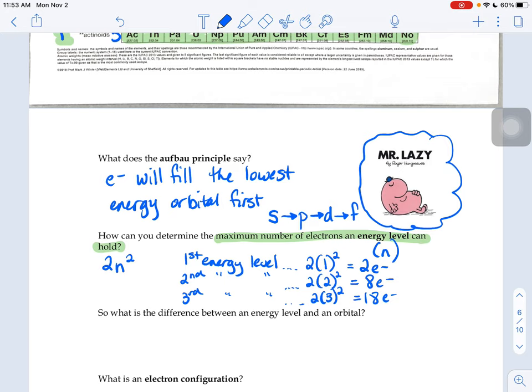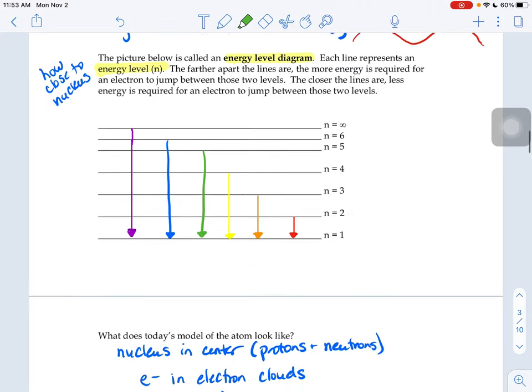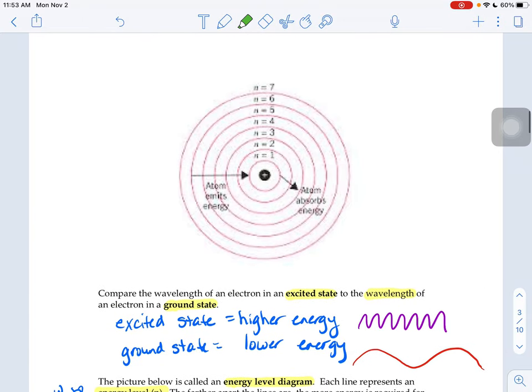You might remember those numbers of 2, 8, and 18, perhaps from your junior high science days, that when you were drawing pictures of atoms that looked something like this. That when you were distributing the electrons of an atom,